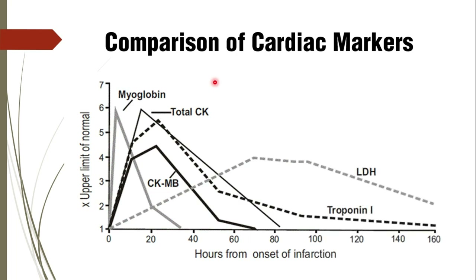This chart gives you a fair idea of the rise, peak, and fall of respective enzymatic cardiac markers — CKMB, total CK, myoglobin, and LDH which is late to rise and late to fall. Here you can get a good comparative idea of all the cardiac markers.